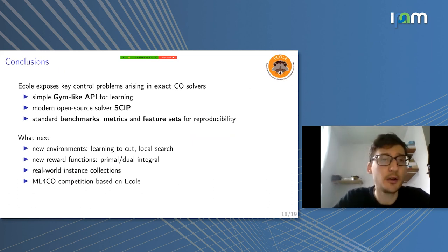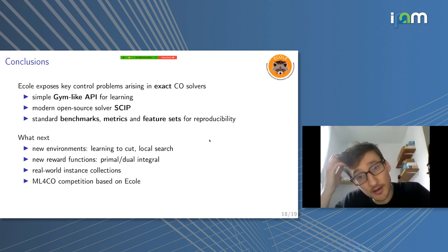To conclude, Ecole is a library which exposes control problems in exact combinatorial optimization solvers through a simple gym-like API so that people can just run reinforcement learning or imitation learning or whatever algorithms using this API. You don't even have to do machine learning. You can just prototype some quick decision rules that you would like to try in Python and just run on some benchmarks and evaluate it as well. So it's useful also even if you don't want to use machine learning. It's based on SCIP and it provides as well standard benchmarks, standard metrics, and feature sets, which we try to add as it goes.